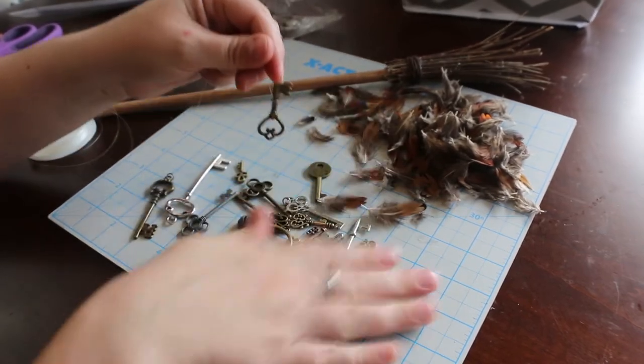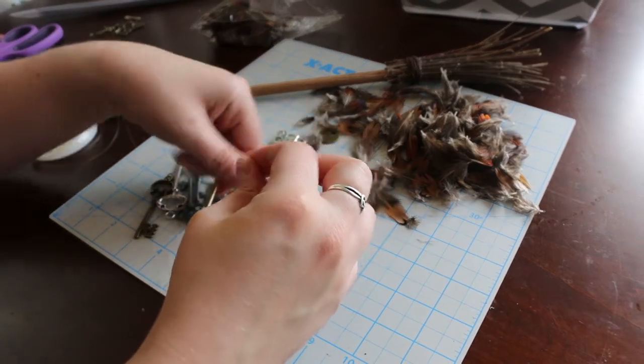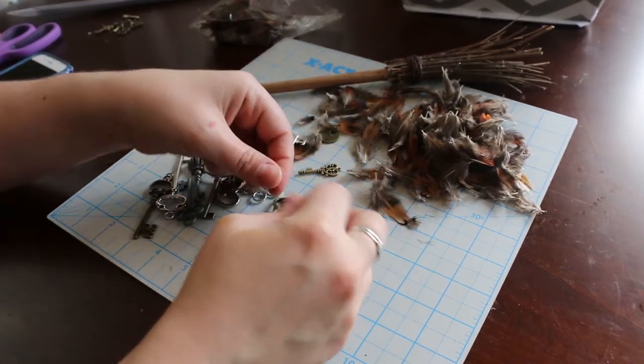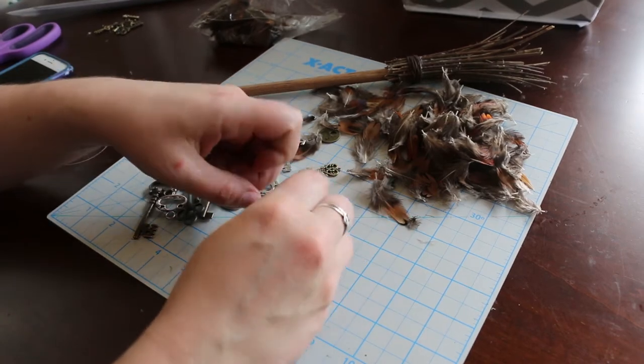Don't worry, we'll be adding some glue in a little bit to kind of secure all this, but just find your good spot and tie a knot. Now trim the excess from the short side but leave the long.